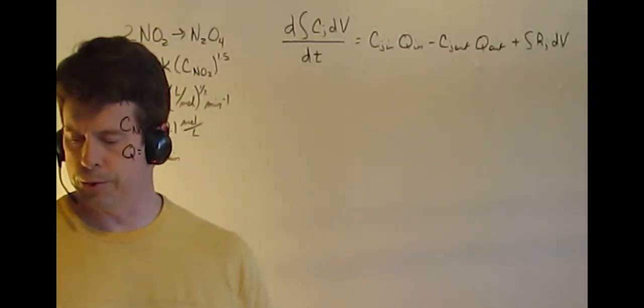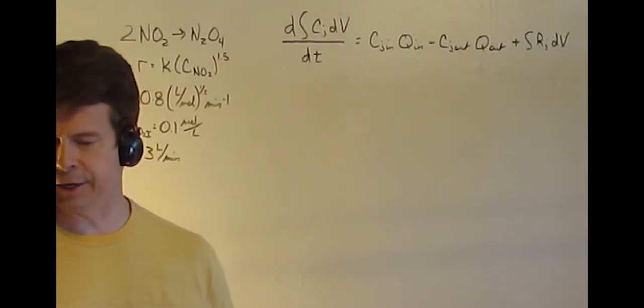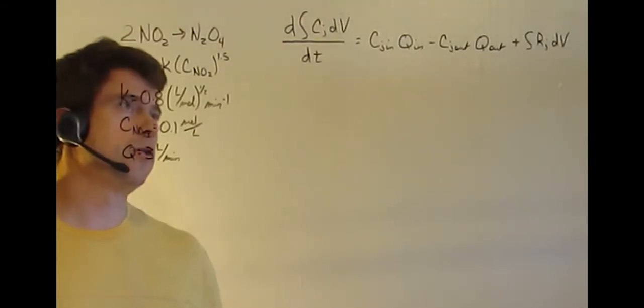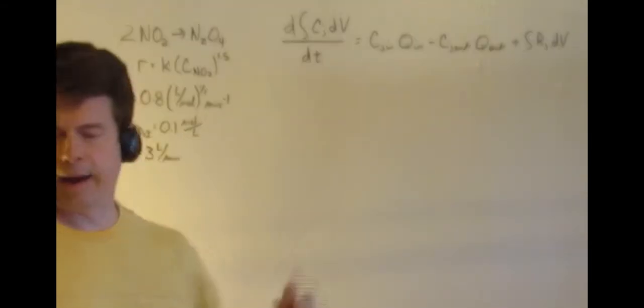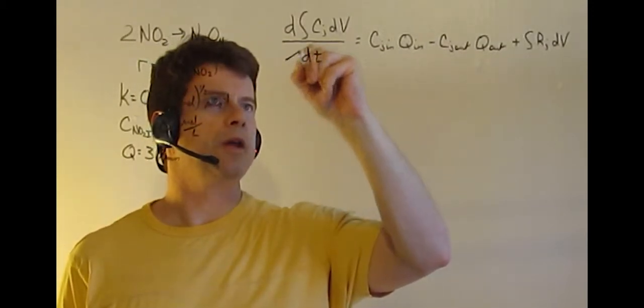This problem asks us to compare the volume required for a reaction which could take place in either a CSTR or in a PFR. Looking at our mass balance equation, we know there's not going to be any accumulation with either of these.